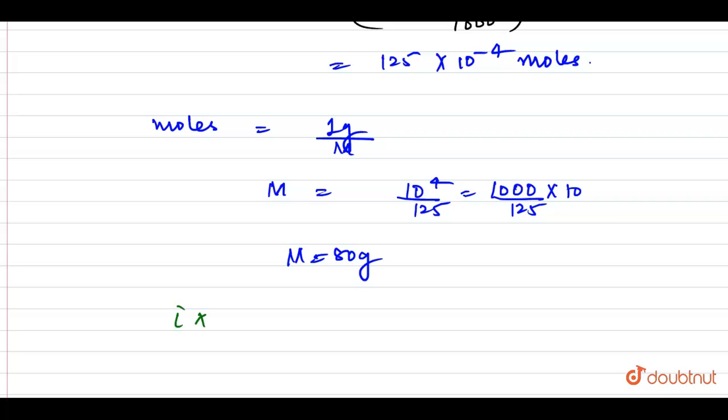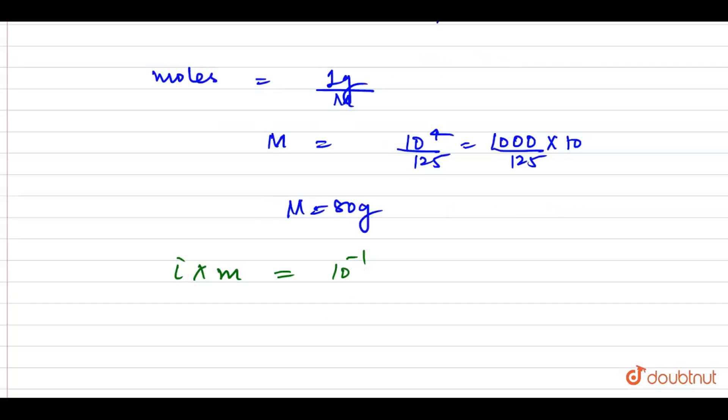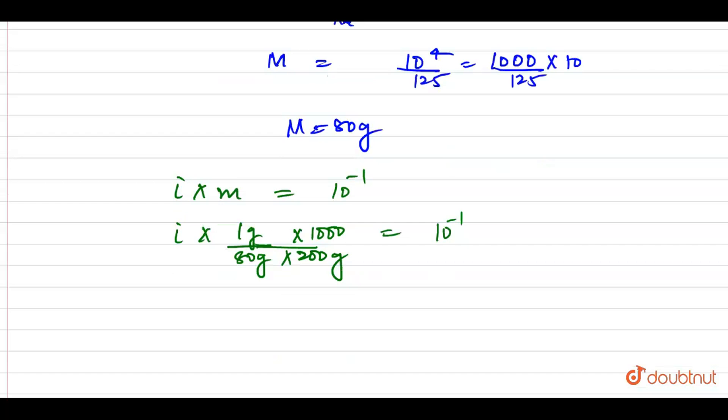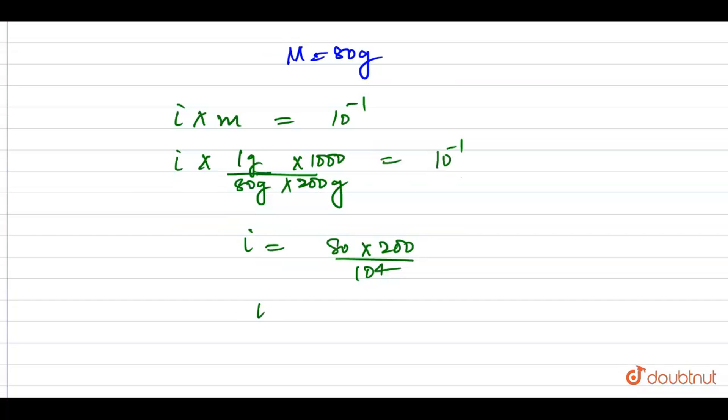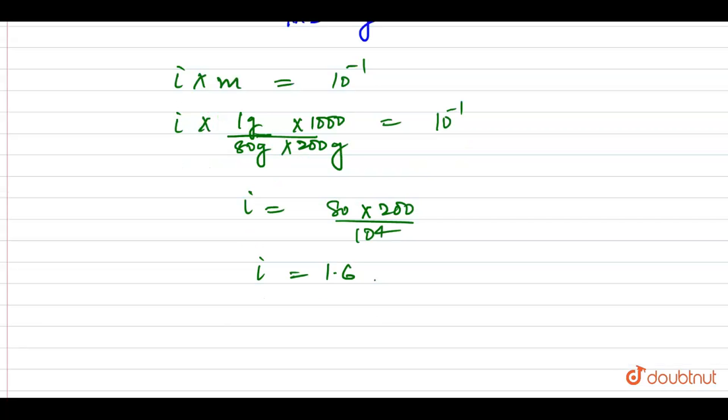I know that i into M from equation 1 was 1 by 10. Now, I have everything for molality. Molality is 1 gram divided by 80 molar mass into 200 grams of water into 1000. The i value comes out to be equal to 1.6.